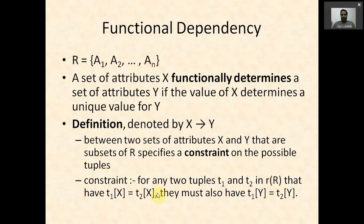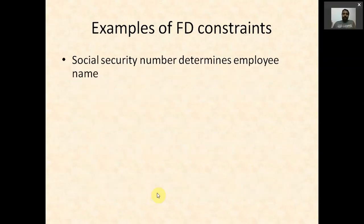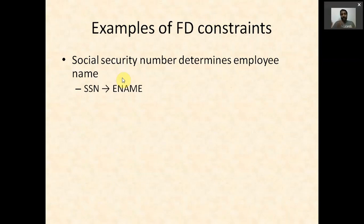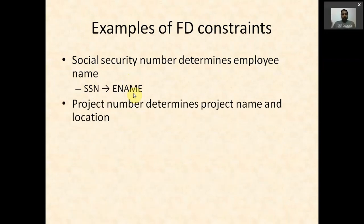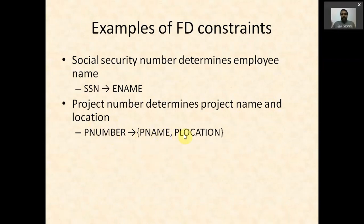If two rows have the same X values then Y values will also be the same, and we say Y is functionally dependent on X. For example, social security number functionally determines employee name, denoted SSN → Ename. Another example: project number determines project name and location, denoted PNumber → PName, PLocation, meaning both PName and PLocation are functionally dependent on PNumber.